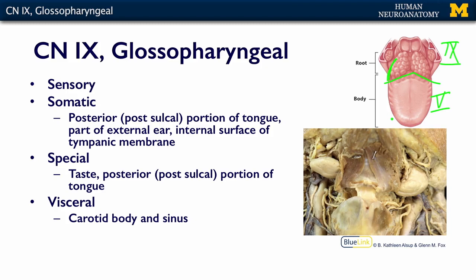There is another special sensory part related to the carotid artery, which splits into internal and external components. The external carotid supplies blood to the face, and the internal carotid contributes a large portion of cerebral circulation. At the carotid bifurcation there are two special sensory structures: the carotid body and the carotid sinus. These organs measure blood pressure and CO2 concentration, and that visceral information is carried back to the brainstem by the glossopharyngeal nerve.